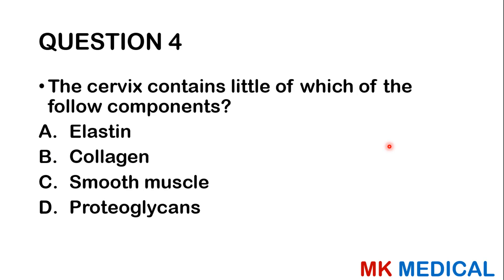Question four: The cervix contains little of which of the following components? A, elastin; B, collagen; C, smooth muscles; D, proteoglycans. The answer is smooth muscles. Remember that the cervix is not a muscular structure. So if a placenta implants in that area — like in placenta previa — the blood vessels will keep bleeding regardless of uterine contraction because there are very few smooth muscles in the cervix to clamp on blood vessels.